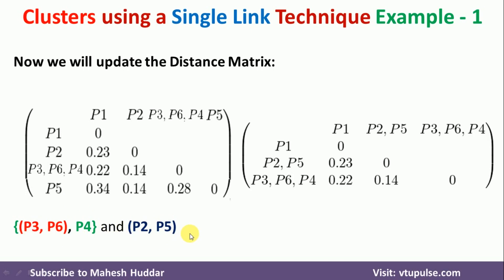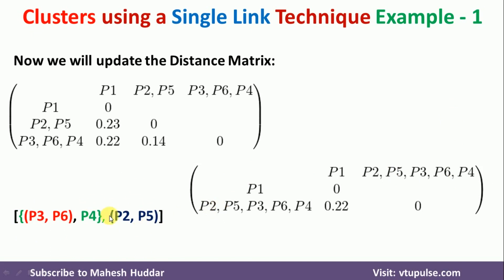So we now have three clusters: (P3, P6, P4), (P2, P5), and P1 remaining separately. From the resulting matrix again, 0.14 is the minimum, between (P2, P5) and (P3, P6, P4). We merge these two clusters, removing that row and column, leaving us with P1 and the merged cluster, with a distance of either 0.22 or 0.23 remaining.